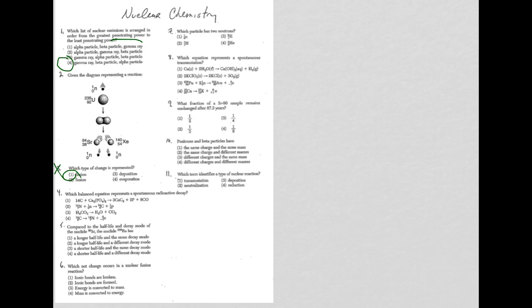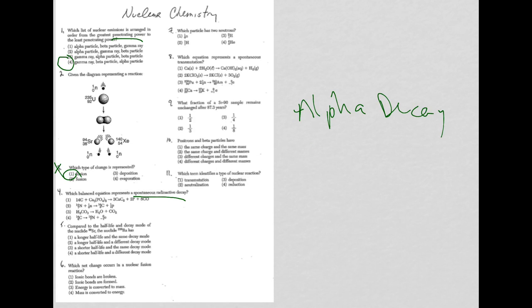Question four: which balanced equation represents a spontaneous radioactive decay? That's going to be either alpha decay or beta decay. You're looking for one reactant and an alpha or beta particle as part of the products. The only choice that fits is choice four - carbon-14 making nitrogen-14 and a beta particle.